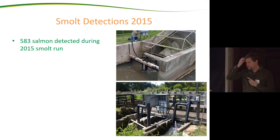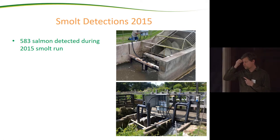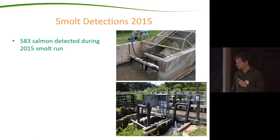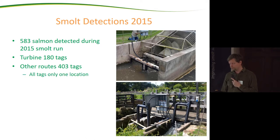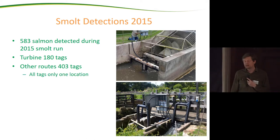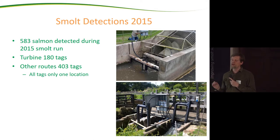2015 was the first year this system was up and running properly. In that year we detected 583 salmon smolts passing Binden: 180 used the turbine route and 403 chose one of the other two routes. All these tags were only detected at one station, so we're confident that station represented the actual and only route used — movement was very unidirectional.